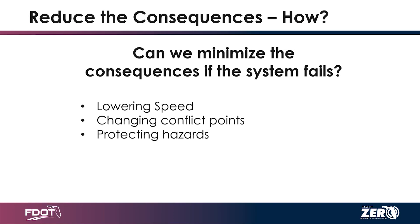We need to ask not just what's the best case scenario, but in the worst case, what do we need to do in our design or countermeasure process to keep this from happening? If something does happen, how do we minimize the consequences? Lowering speeds is the big thing — designing for users is hard, so it's easy to say 'it's a user problem.' But we do have an effect on that. Lowering speed limits helps in pretty much every instance. Changing conflict points helps, protecting your hazards, using different types of barrier — all of these help mitigate consequences.